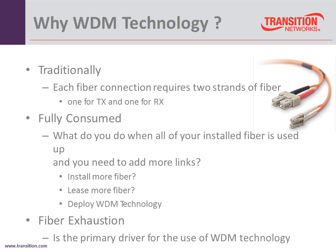Traditionally, I take a fiber loop and plug in a device on each side — one fiber does transmission, one does receive — and it becomes fully consumed. You have so many fiber pairs within your bundle going from building to building, and you start plugging in devices until they're all used up — what we call fiber exhaustion. At that point, you can put in new fiber, but that takes trenching or hanging it, buying it, and connecting it up. Or you can deploy WDM technology, taking the fiber already in place and utilizing it better, adding more capacity and more devices on the same fiber.